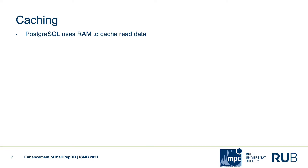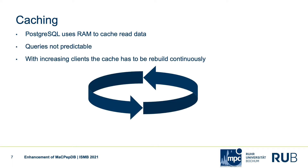Of course, PostgreSQL uses RAM to cache read data for faster access, but due to the unpredictability of the queries and with increasing numbers of clients, the cache has to be rebuilt continuously, losing its advantage.